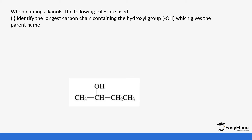The first rule is to identify the longest carbon chain, and this is the one that contains the hydroxyl group. You remember when we were looking at alkenes and alkynes, we talked about the double bond or triple bond. In this case the OH is the main focus, so you look at the chain that contains the OH.